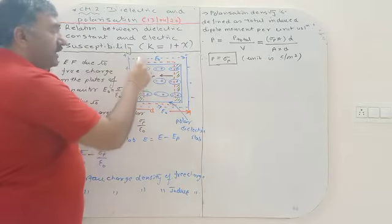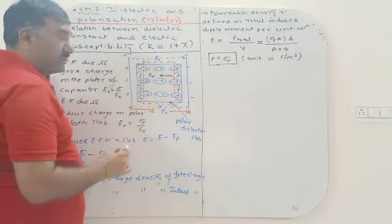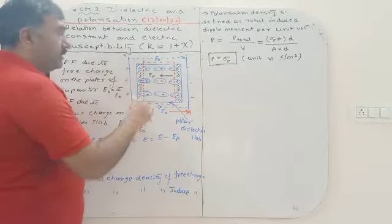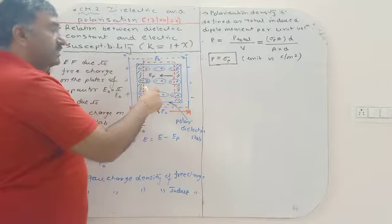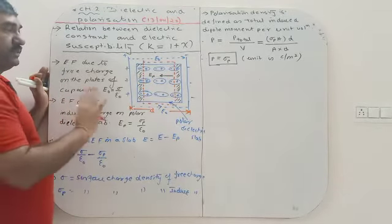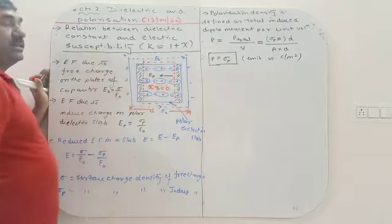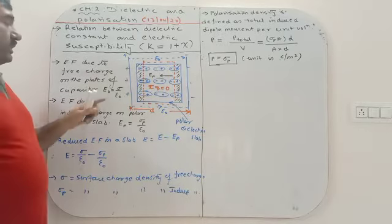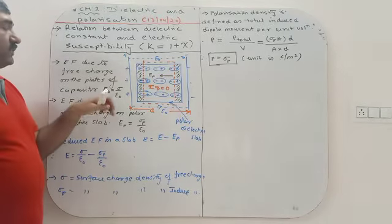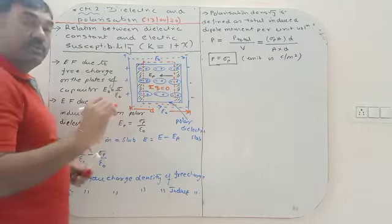Near the positive plate there is a line of negative (induced) charge, and near the negative plate there is a line of positive (induced) charge. The internal columns of alternating plus and minus charges nullify each other, so inside the bulk of the dielectric there is no net charge and no resultant electric field from the bound charges.